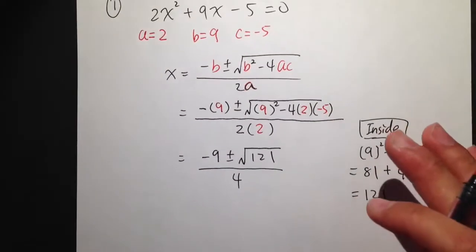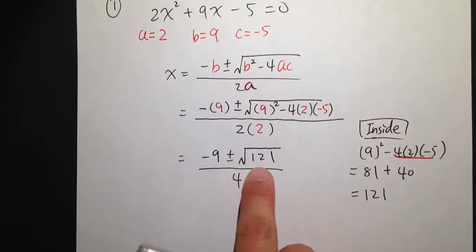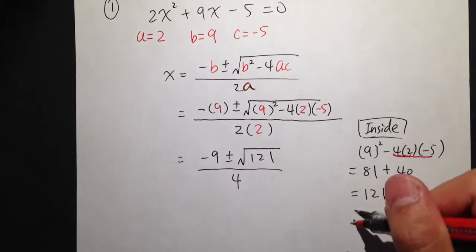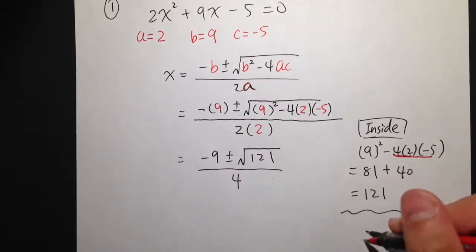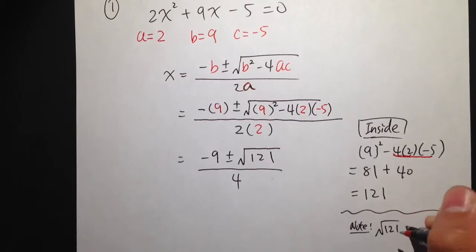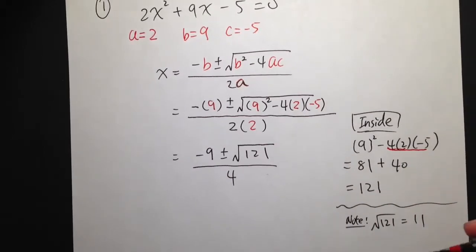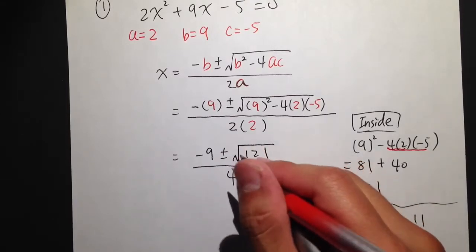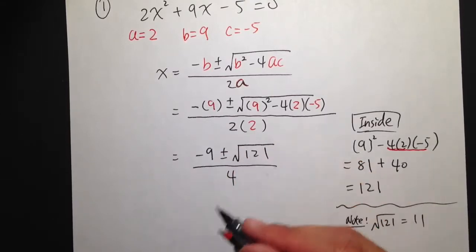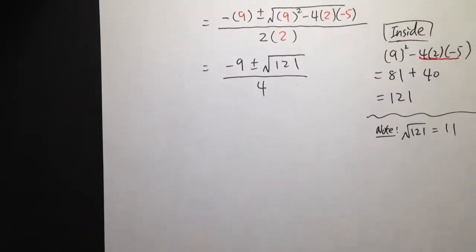So this is pretty much how it works. However, we notice that square root of 121, it's actually a nice number. Square root of 121 is 11. So I'll put a note right here. Square root of 121, it's equal to 11. Because 11 times 11 is indeed 121. If this is something that we can simplify, we shall keep going. And this is how we keep going.